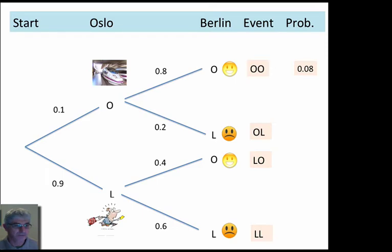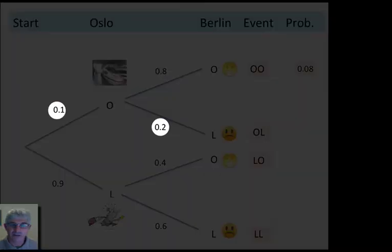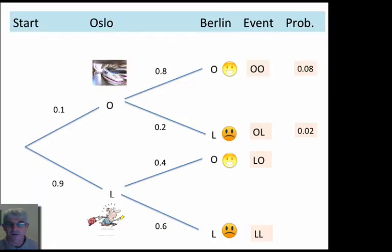The next event, the OL event, on time to Oslo, late to Berlin. 0.1 is the branch to Oslo, 0.2 the branch to Berlin, 0.1 times 0.2, 0.02.